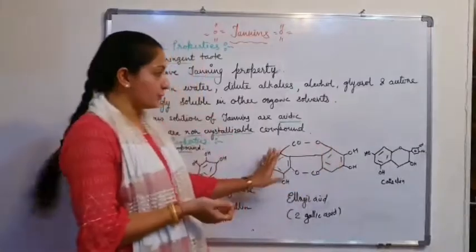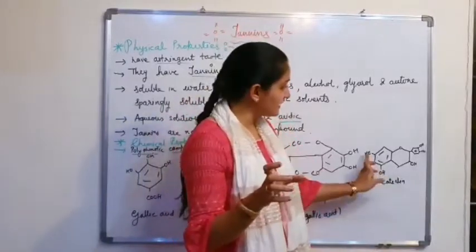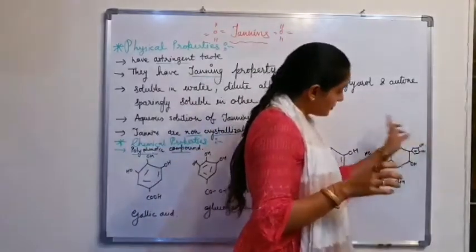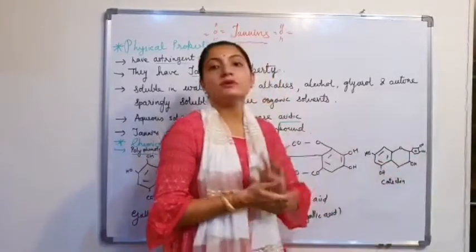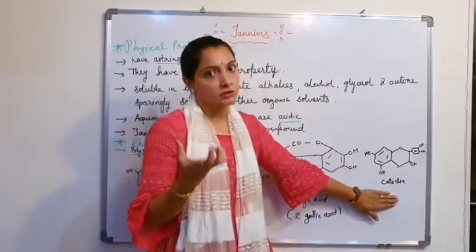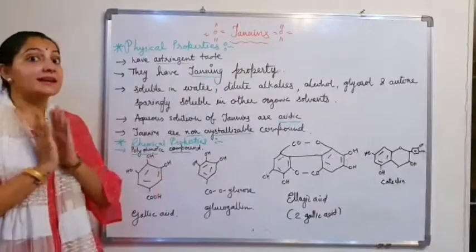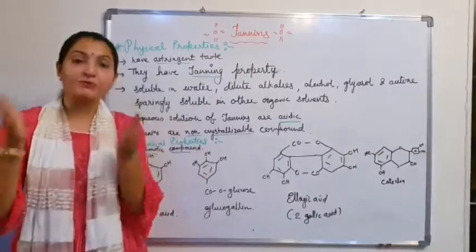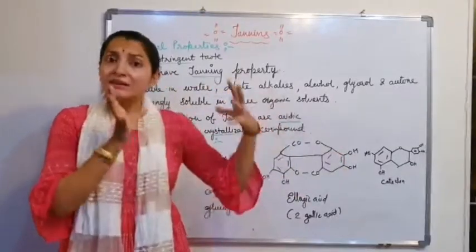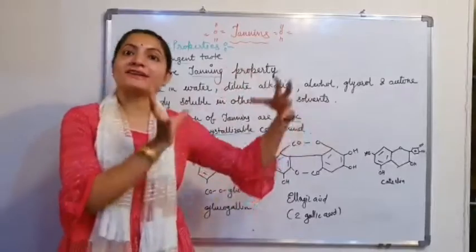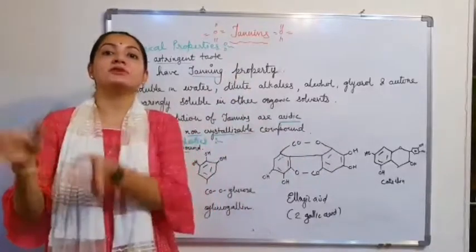All these compounds are polyphenolic, containing OH groups and phenolic compounds. Catechol also has a structure with benzene rings bearing OH groups — this is the basic structure of catechol. From these structures — catechol, gallic acid, and ellagic acid — we understand that tannins are complex organic compounds with high molecular weight, non-nitrogenous, and polyphenolic in nature.